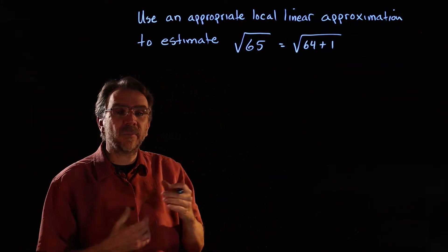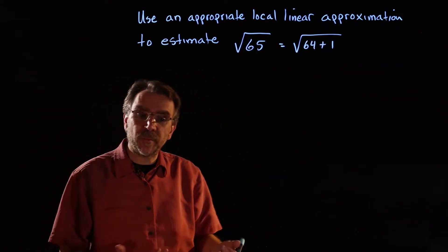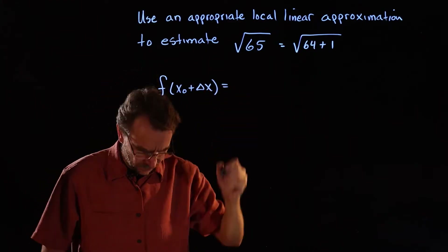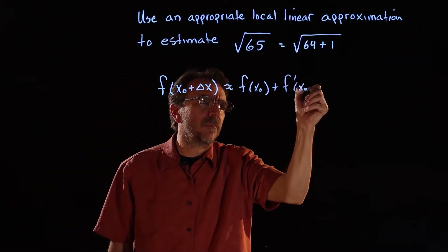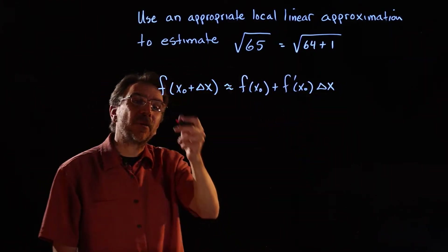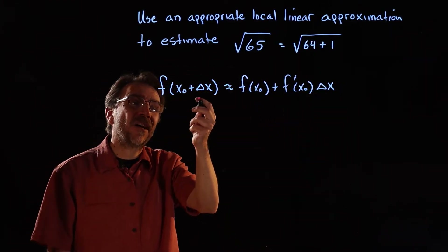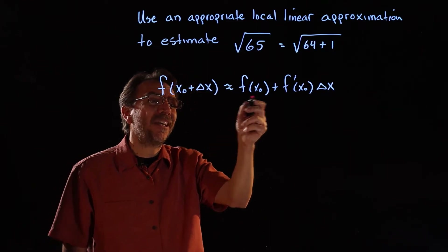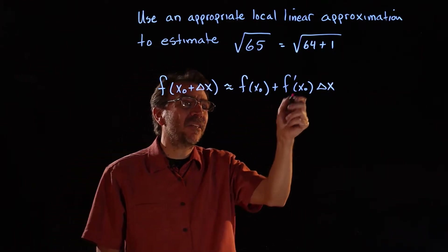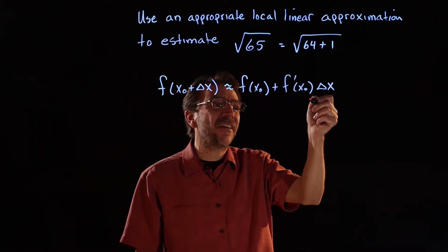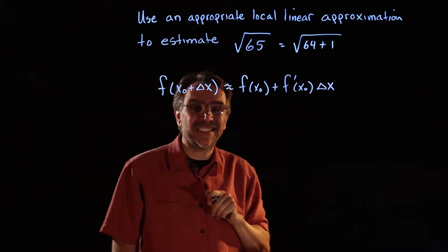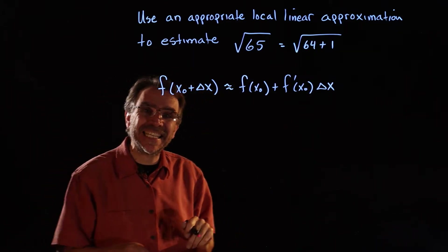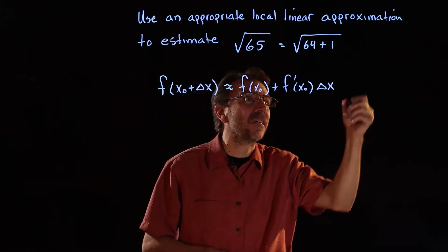The local linear approximation formula is: f of x naught plus delta x is approximately equal to f of x naught plus f prime of x naught times delta x. We're going to derive that in a minute, but let's first see how we can use this.